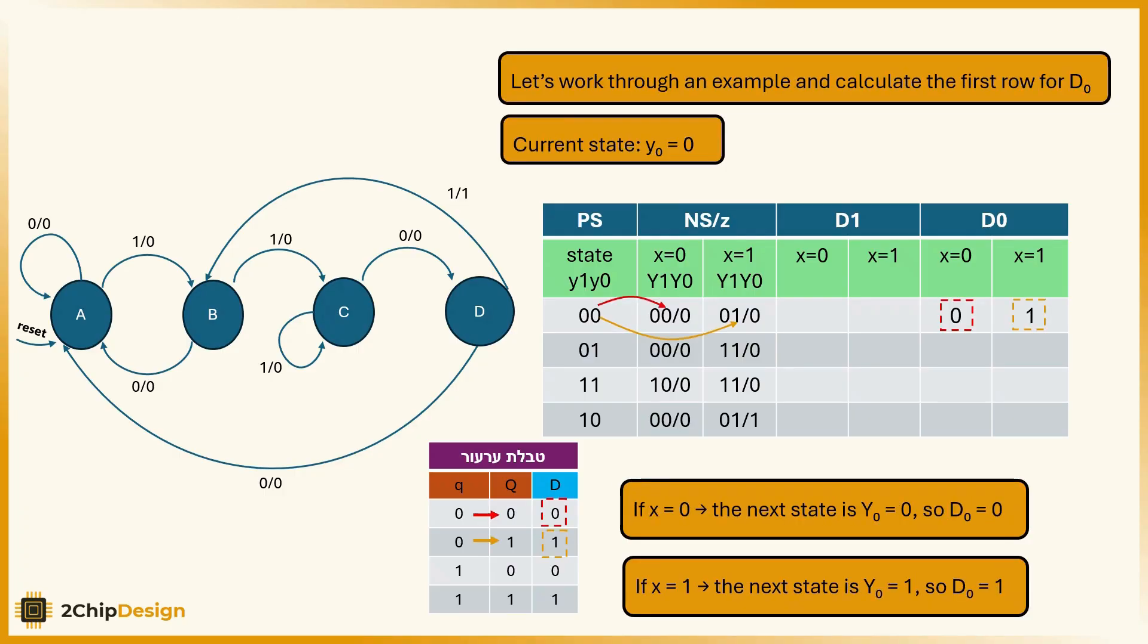Let's work through an example and calculate the first row for D0. Current state, y0 equals 0. If x equals 0, the next state Y0 capital equals 0, so D0 equals 0. If x equals 1, the next state is Y0 capital equals 1, so D0 equals 1.